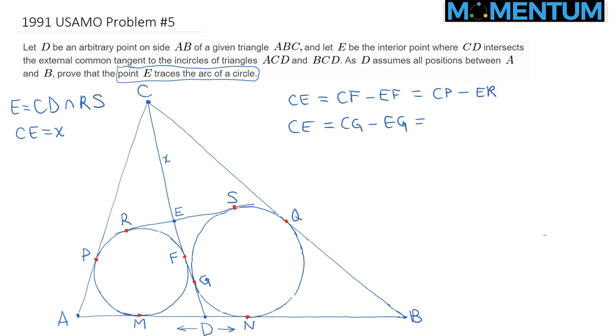In a similar way, CG is just CQ by equal tangents. This time on this circle, obviously, the second is the right circle. Minus EG is simply ES, which is quite clear. Again, from the point E, we are drawing two tangents to the circle on the right side, and ES is obviously equal to EG.